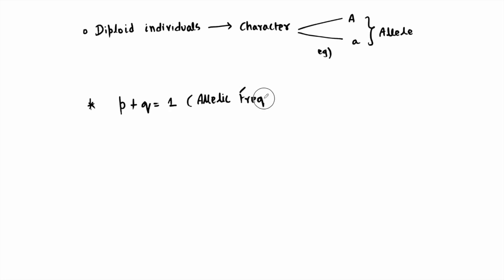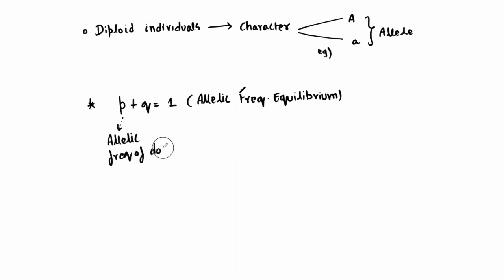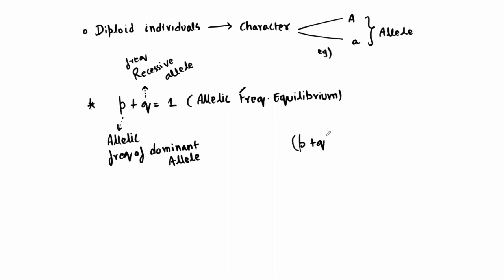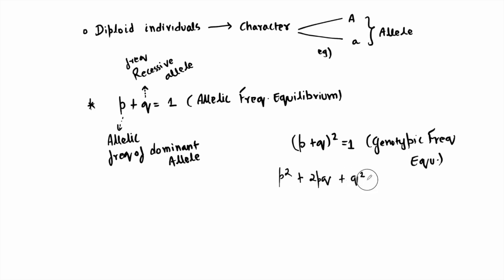In allelic frequency equilibrium, small p refers to the allelic frequency of the dominant allele, while small q refers to the allelic frequency of the recessive allele. But when we write (p + q)² = 1, this becomes a modified equation called genotypic frequency equilibrium.